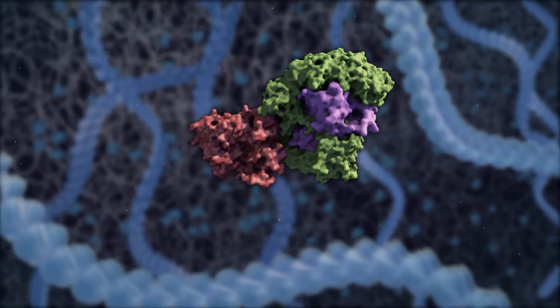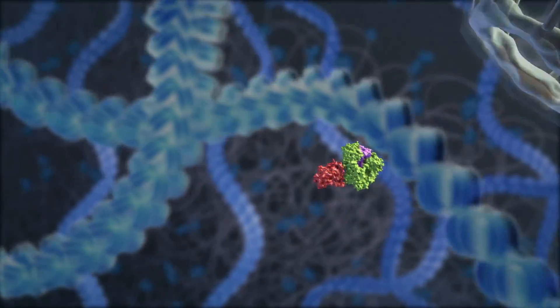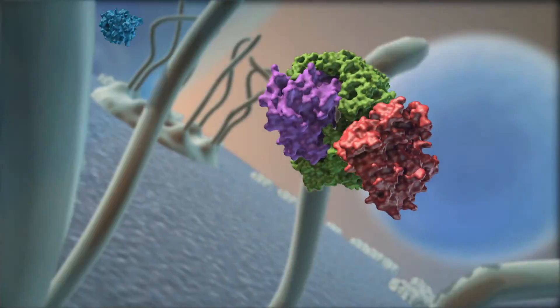The protein complex of exportin, RAN-GTP, and the cargo protein is now allowed through the nuclear pore complex. In the cytosol, GTPase hydrolyzes RAN-GTP into RAN-GDP.